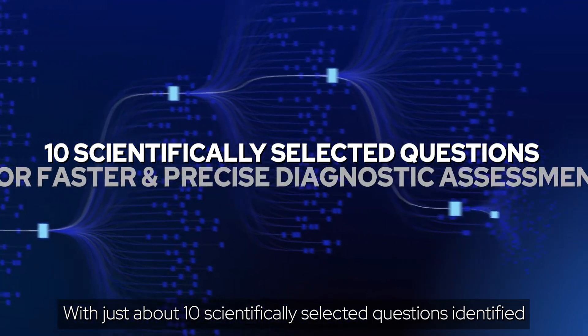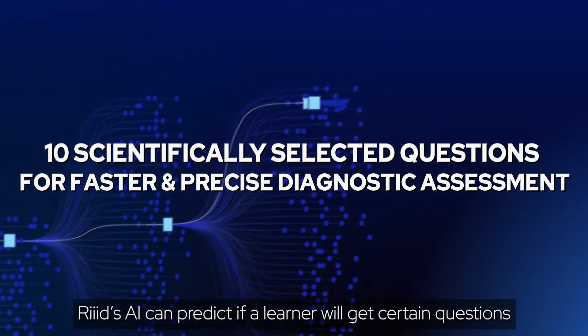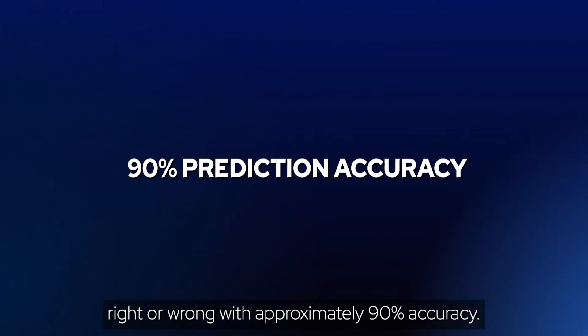With just 10 scientifically selected questions identified from your data set of learner interactions, RID's AI can predict if a learner will get certain questions right or wrong with approximately 90% accuracy.